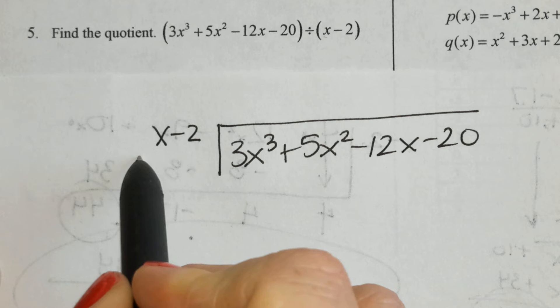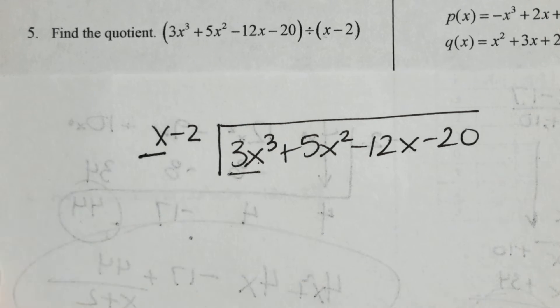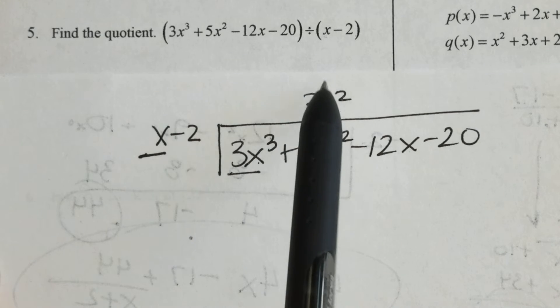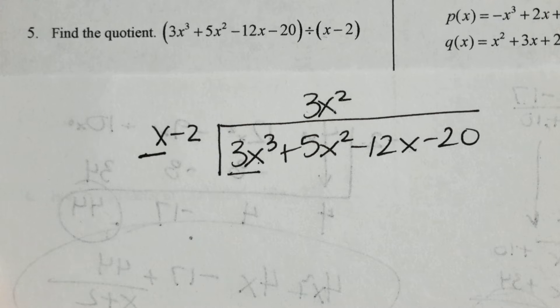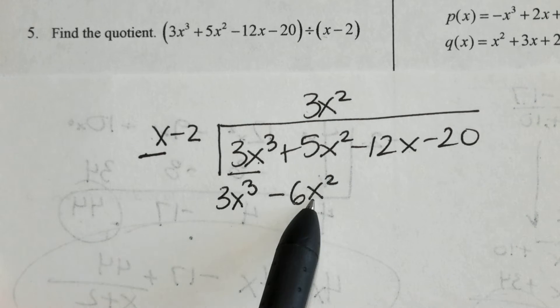So, I'm going to go over long division with polynomials. x times what is 3x cubed? Notice not only did I choose 3x squared, I put it in the squared column. Then I'm going to distribute this to both the 1st and the 2nd terms.